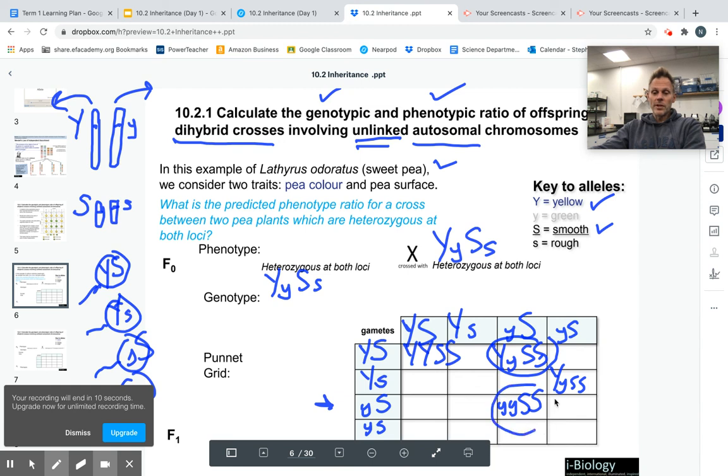However, in this situation, we have a little y, little y. So that means it's a green plant, but big S, big S. So that's going to be smooth. And that's how dihybrids work.